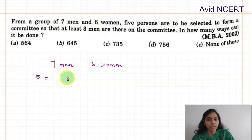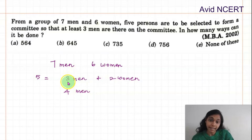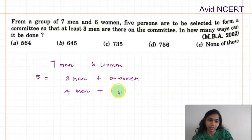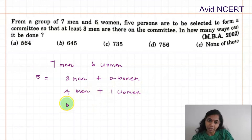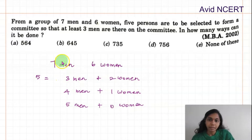Since it is at least three men, the possible combinations are: three men plus two women, or four men plus one woman, or five men and zero women — each totaling five persons.